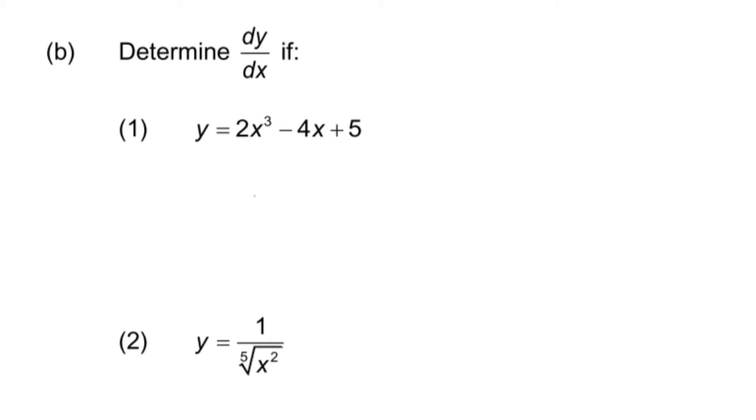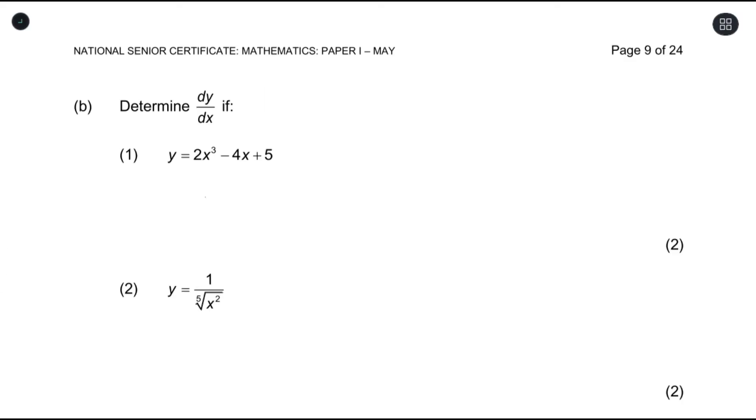The first one was y equals 2x squared minus 4x plus 5. To answer a question like this, we need to remember that whenever we have this, the derivative of this would be—we multiply the exponent by the coefficient and write it, and we subtract the exponent from 1, and that's your derivative.